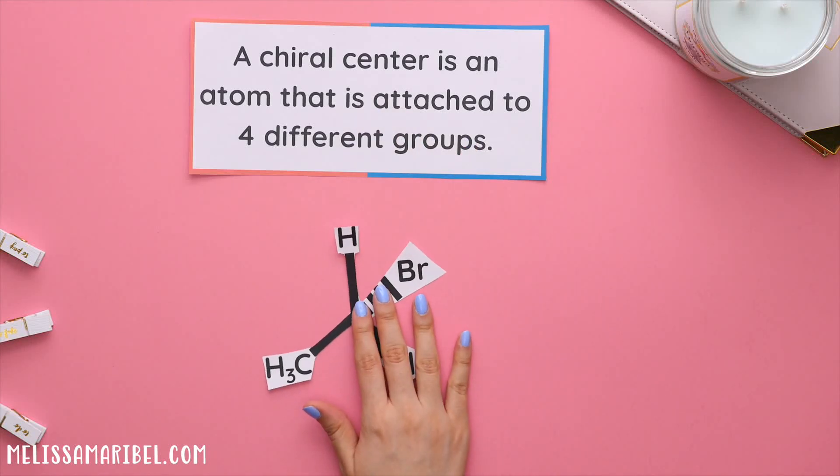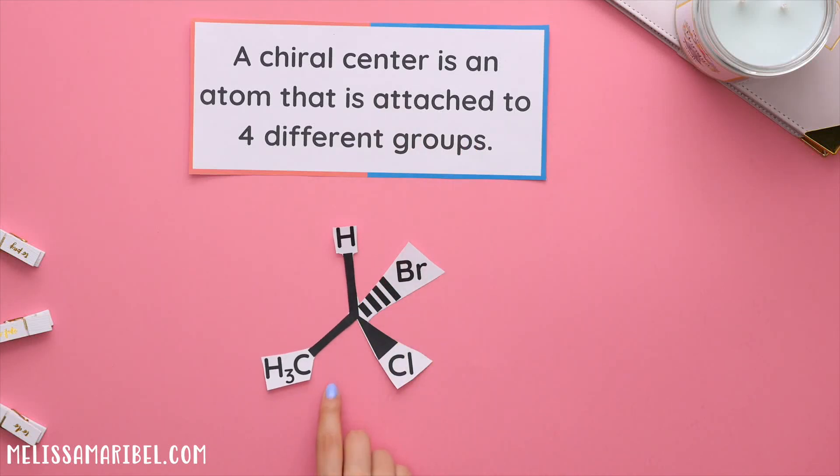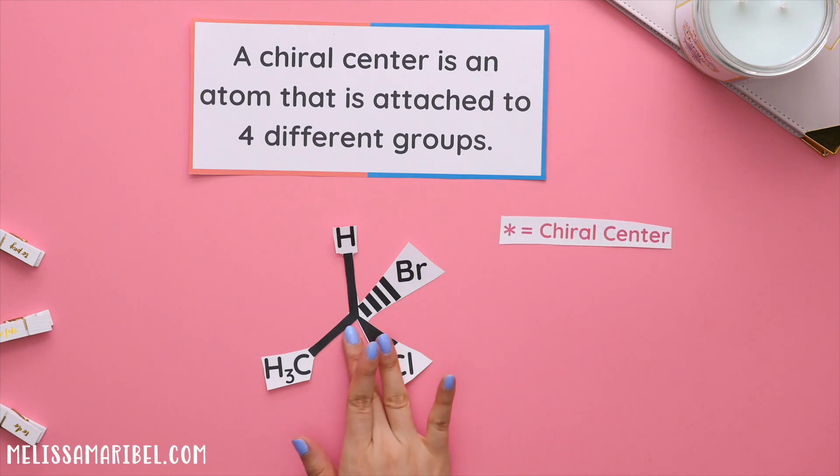A chiral center is an atom that is attached to four different groups. We represent a chiral center with an asterisk.